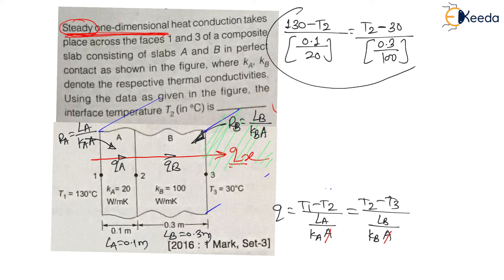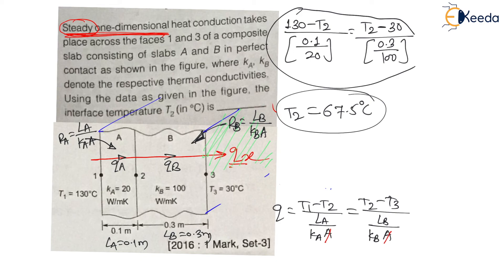Only T2 is unknown, so let us solve this using school-level mathematics. As I have kept temperatures in degree Celsius, T2 will also be found in degree Celsius. Solving, I get T2 = 67.5°C. As this is a fill-in-the-blank question asking for T2 in degree Celsius — and the unit is already mentioned — the answer to write is 67.5, which will earn full marks.